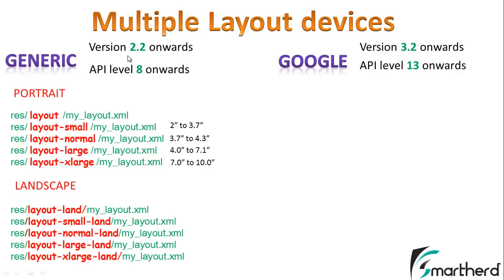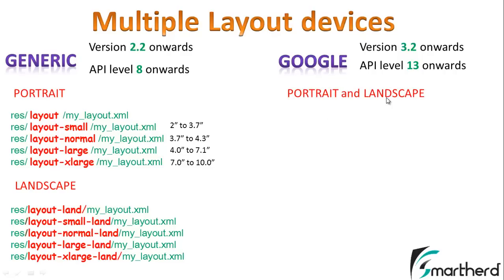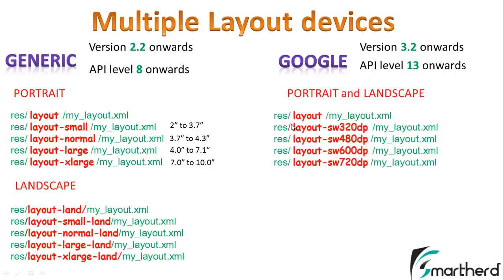These 10 folders for generic phones are only recommended if you want your application to run on version 2.2 onwards. But if you set your minimum required SDK version to 3.2 — meaning you don't need support for Android 2.2 to 3.0 — then you design portrait and landscape layouts and store them in 5 folders: layout, layout-sw320dp, layout-sw480dp, and so on.